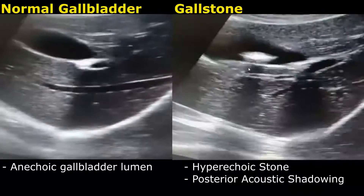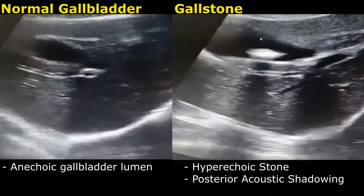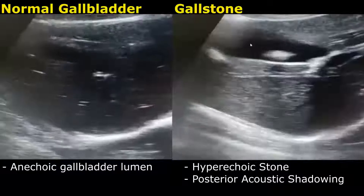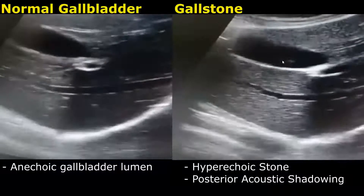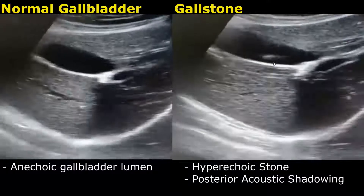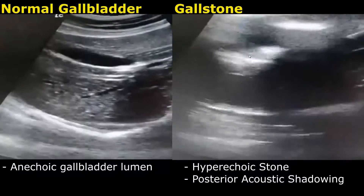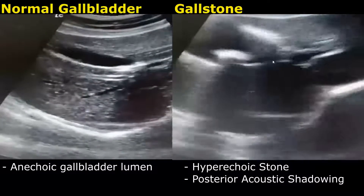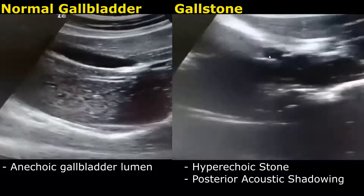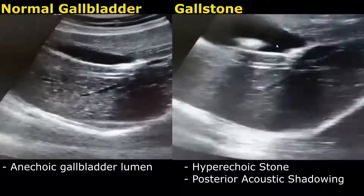The gallbladder is distended. The gallstone seems to be in the body and is separate from the neck of the gallbladder.